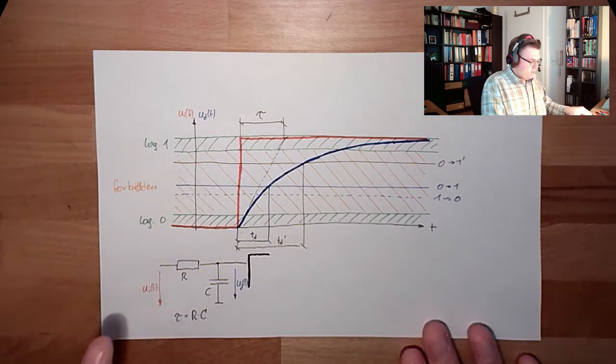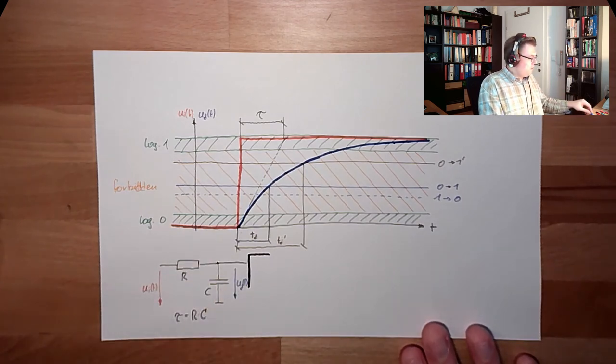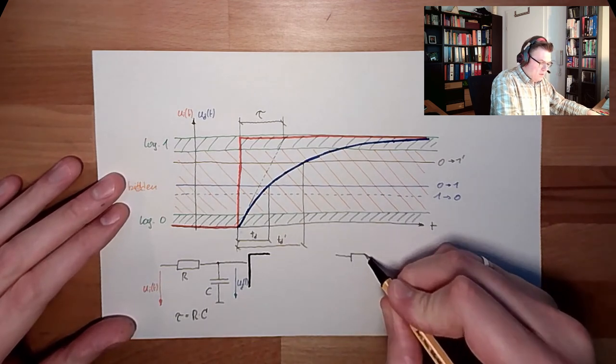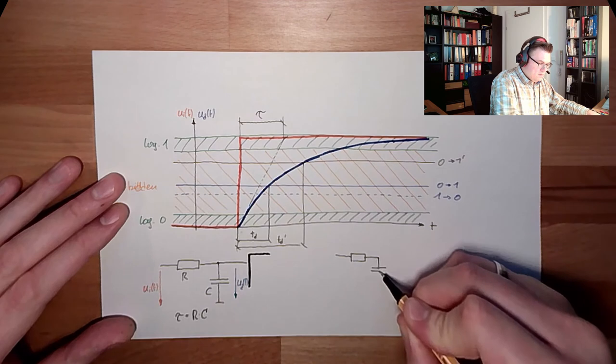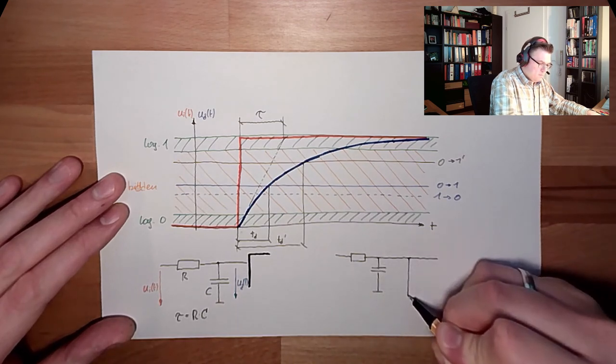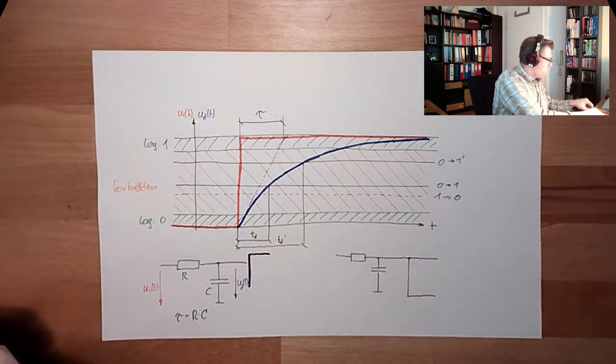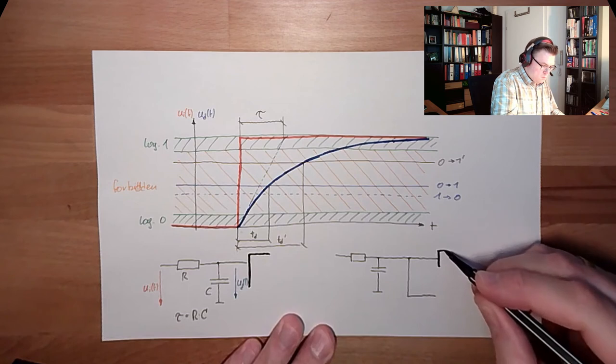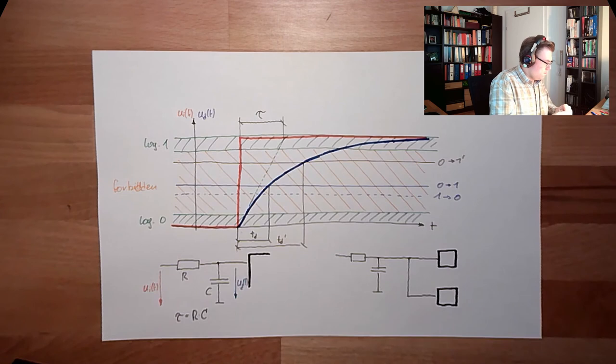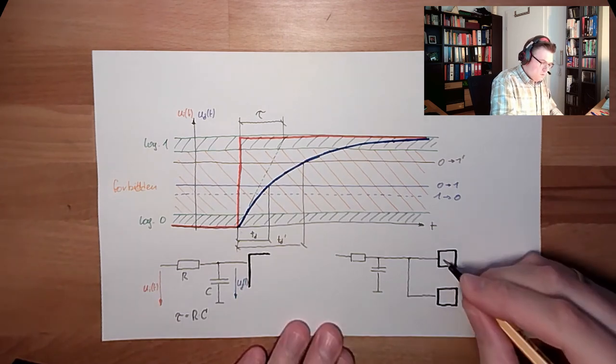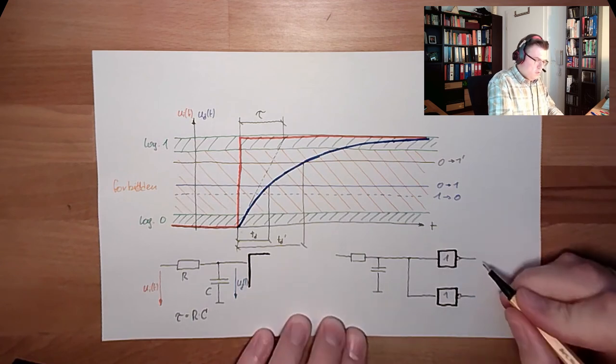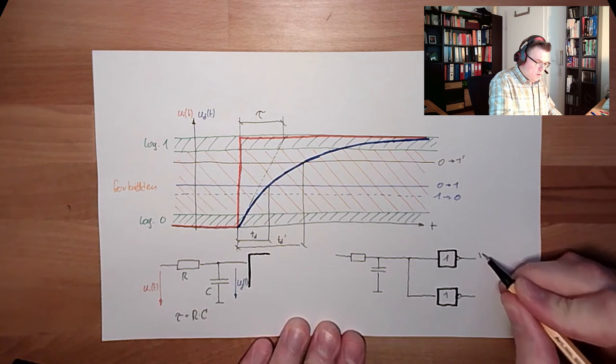Especially because these things also need space. We also need space. So we could think about using things like this. One one. And here we have Y, and this is Y.